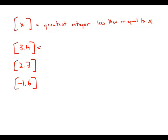Brackets 3.4 would be the largest integer that is less than or equal to 3.4. Well, 3.4 is not an integer. The largest integer that is still smaller than it is 3.